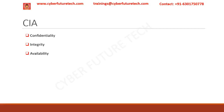Integrity maintains the accuracy, consistency and trustworthiness of data. It uses security measures like file permissions and user access control to keep data safe from being tampered with by unauthorized users. To check data integrity, checksums or cryptographic checksums can be used.